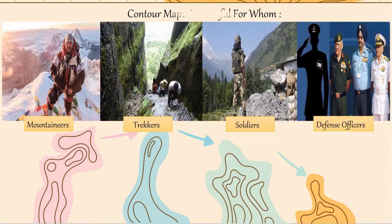To whom are contour maps useful? Contour maps are useful to mountaineers, trekkers, soldiers, and defense officers. With the help of contour maps, we can understand the nature of the ground and its shape. Defense officers use contour maps for strategic planning. It is possible to identify a suitable site for any project from the contour map of the region, and these maps prove to be of great use in planning of a region.